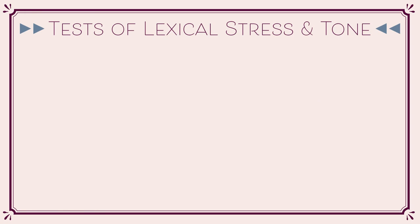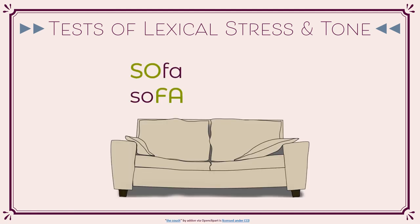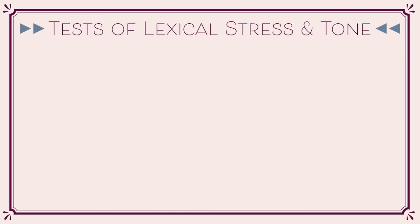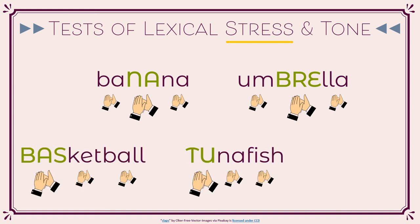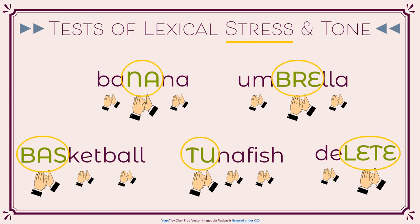Here are a couple of suggestions for teaching or testing stress and tone sensitivity in your language. For both, give children two choices and ask which one is correct. For example, 'sofa' or 'sofa'; 'relax' or 'relax'. For lexical stress only, ask children to clap louder on the stressed syllable. For example: banana, umbrella, basketball, tuna fish, delete. Clap louder on the syllable written in capital letters.